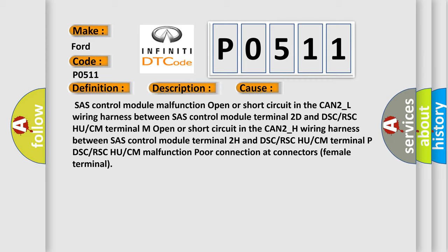Open or short circuit in the CAN2_H wiring harness between shash control module terminal 2H and DSC or RSC HU or CM terminal P. DSC or RSC HU or CM malfunction. Poor connection at connectors female terminal 2H and DSC or RSC HU or CM terminal 2H.